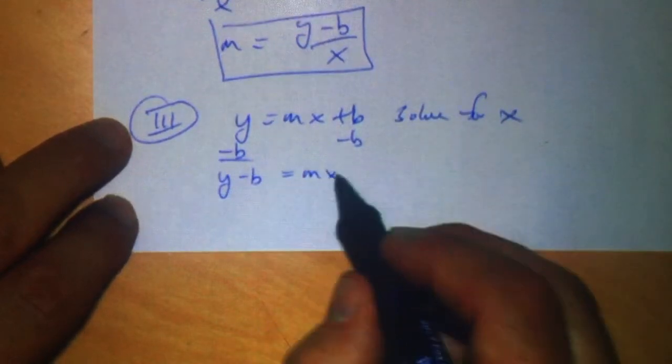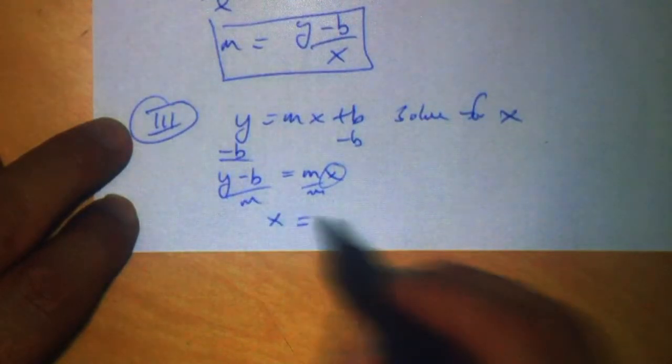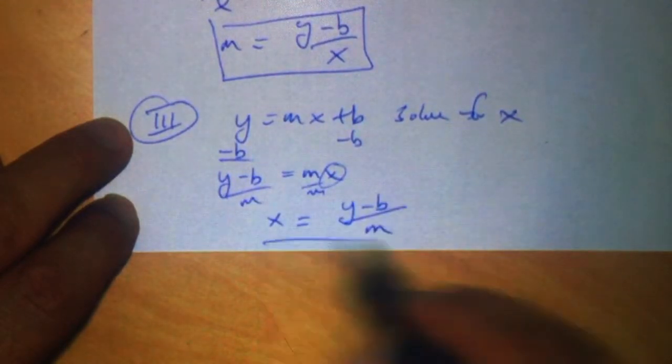And now we're looking for x, so we're dividing by m, and we get x equals y minus b over m. And that's all she wrote.